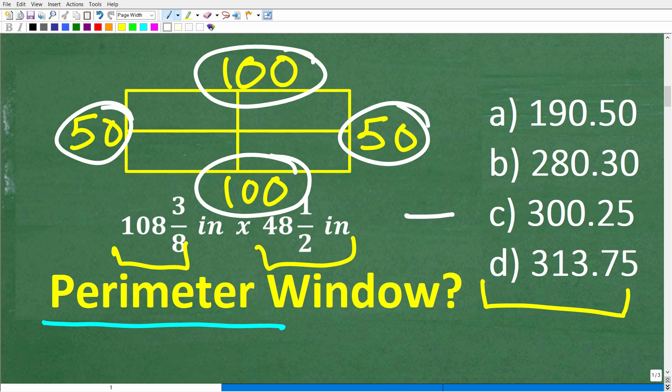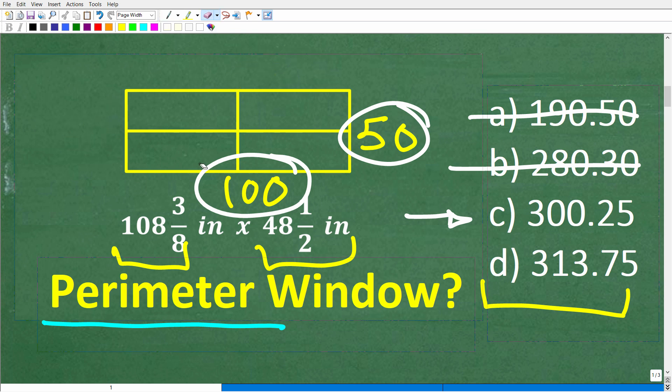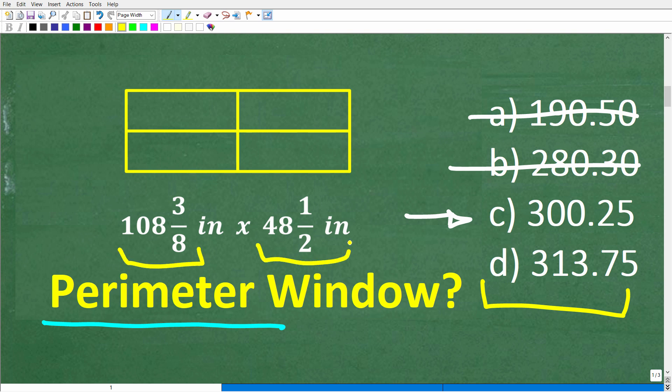Alright, so it appears to be that our perimeter is going to be at least in the ballpark of 300. So we can pretty much safely eliminate choices A and B. Now, what you can do here, just to be certain that you picked the right answer, is to round these numbers more precisely. So instead of 108 and 3 8ths, instead of rounding that to 100, let's maybe call that 108. And then this 48 and 1 half, we'll call 49. Now, when you calculate the perimeter here, you're going to get pretty close to the correct answer, which, of course, is D.